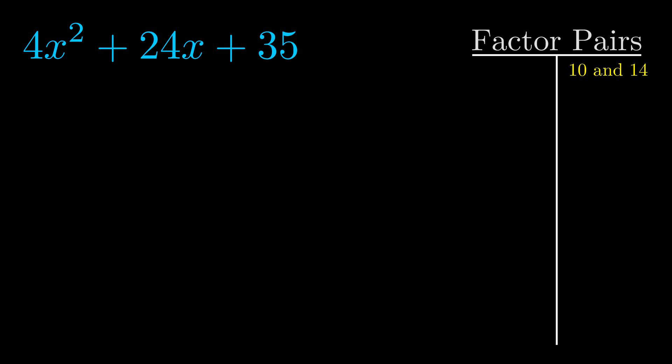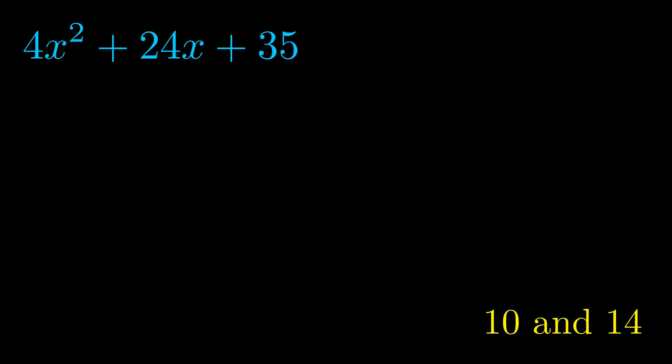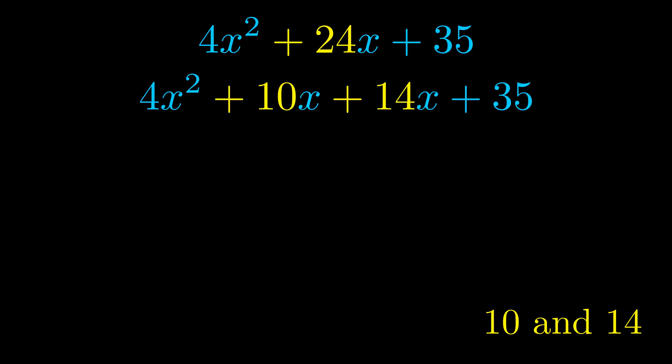Now once we have this factor pair, what we want to do is use it to split up the b value. Notice how I'm going to keep my first term and my last term completely unchanged. It is only this b term highlighted in yellow that gets expanded into this correct factor pair.